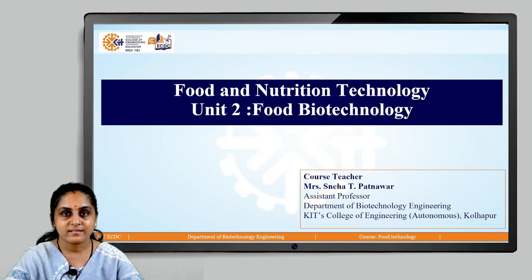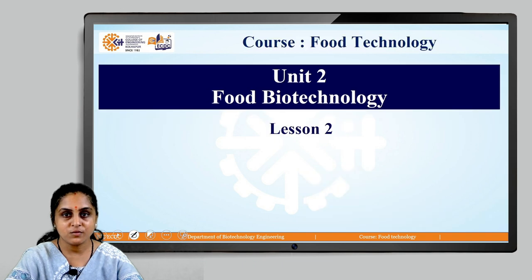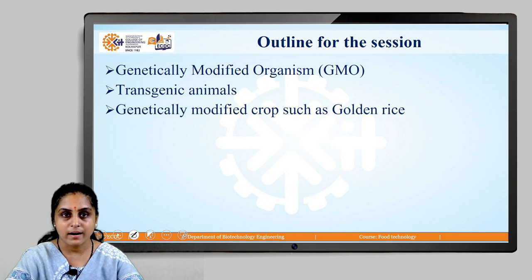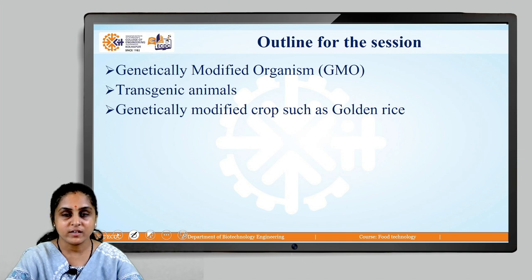Hello class. Today we are going to start with lesson number 2 of unit 2: Food Biotechnology. The outline for today's session covers genetically modified organisms, transgenic animals, and genetically modified crops such as golden rice.